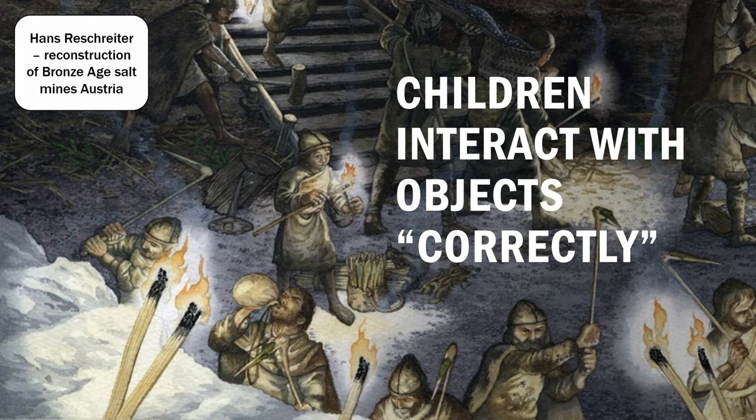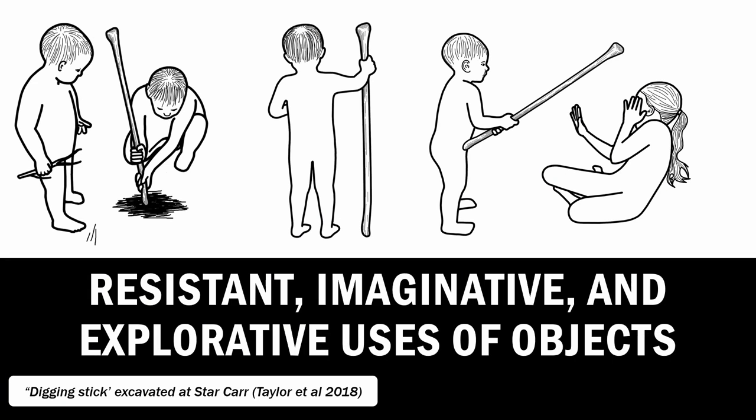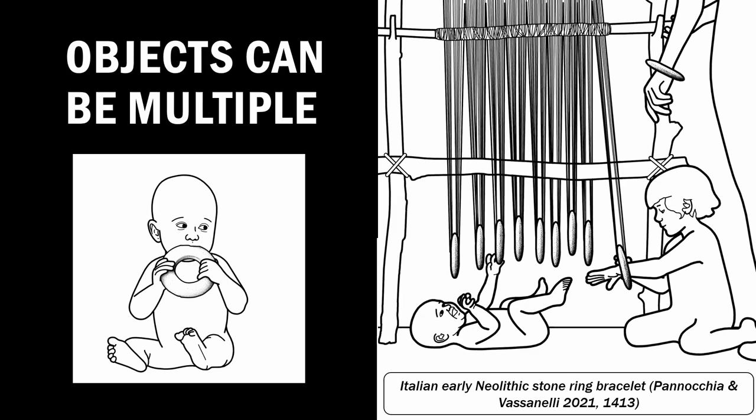One way this manifests is the way children are represented interacting with objects correctly, or in keeping with their function. But modern children interact with objects both in correct and incorrect ways — in resistant, imaginative, and explorative ways. They might use a digging stick for its intended purpose, but they might try out different hand positions, or use it as a walking stick, or use it to hit their sibling. This ties into a broader problem in how we represent objects: we don't represent them as multiple — the ways they can have multiple functions at once. These stone bracelets can be a bracelet or a loom weight, but they also make a particularly effective teething tool: they're cold, smooth, and easy to grasp.